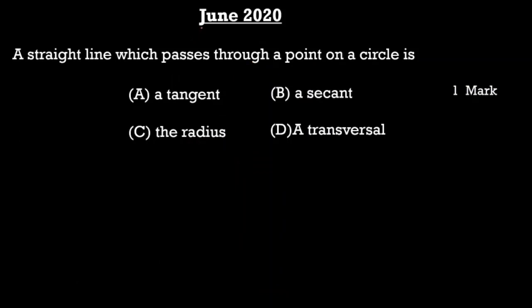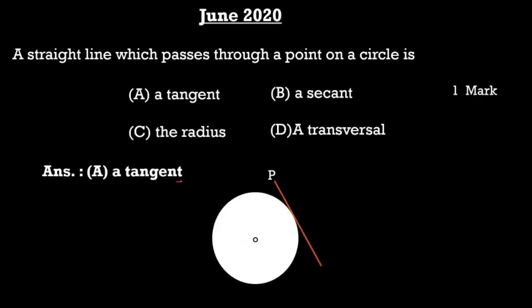Now, moving to the June 2020 question paper. The question is a multiple choice question: a straight line which passes through a point on a circle is — options are tangent, radius, and transversal. The correct option is a tangent. A straight line PQ which passes through a point on a circle is therefore a tangent.